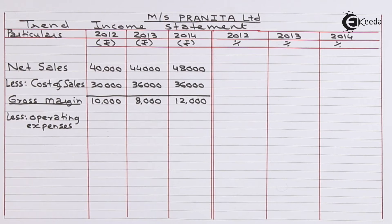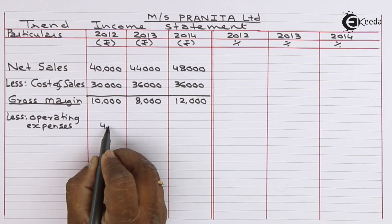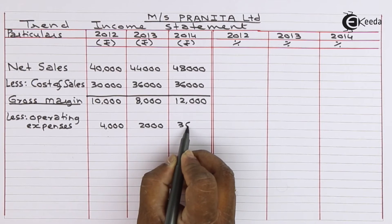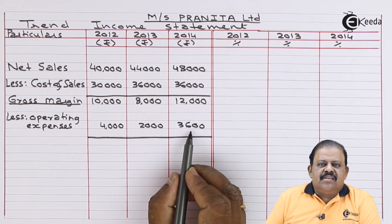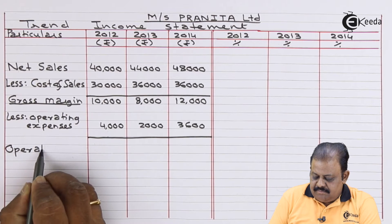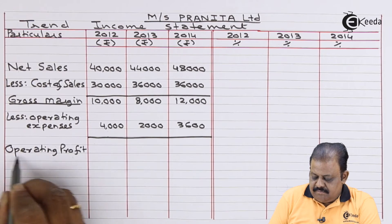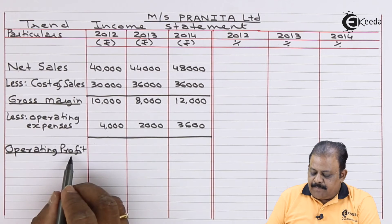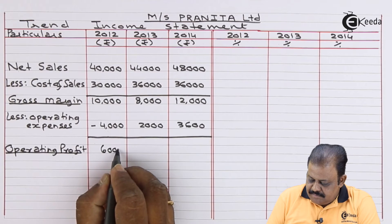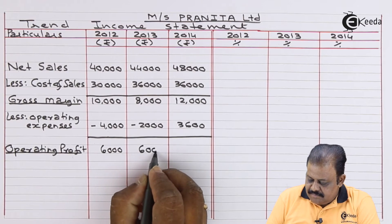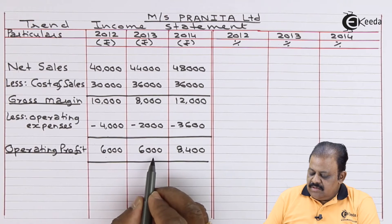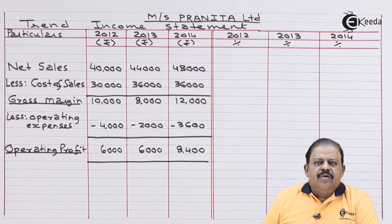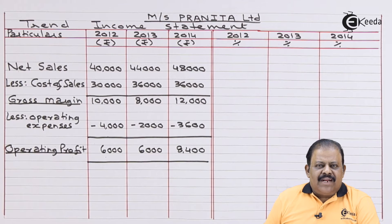Less operating expenses: 4,000 for 2012, 2,000 for 2013, and 3,600 for 2014. Finally we get operating profit: 6,000 for 2012, 6,000 for 2013, and 8,400 for 2014. We have now arranged the vertical income statement and will proceed to the trend statement.